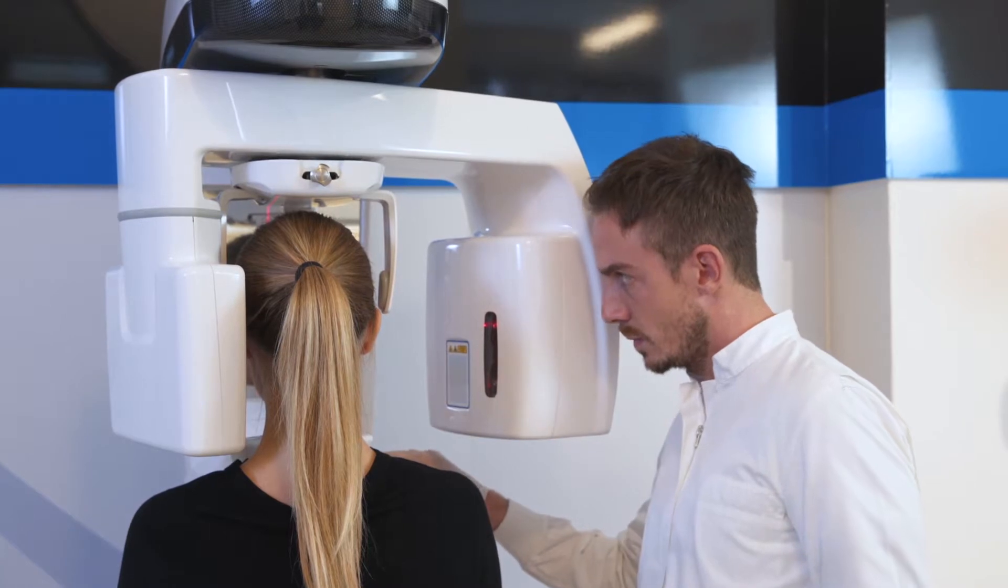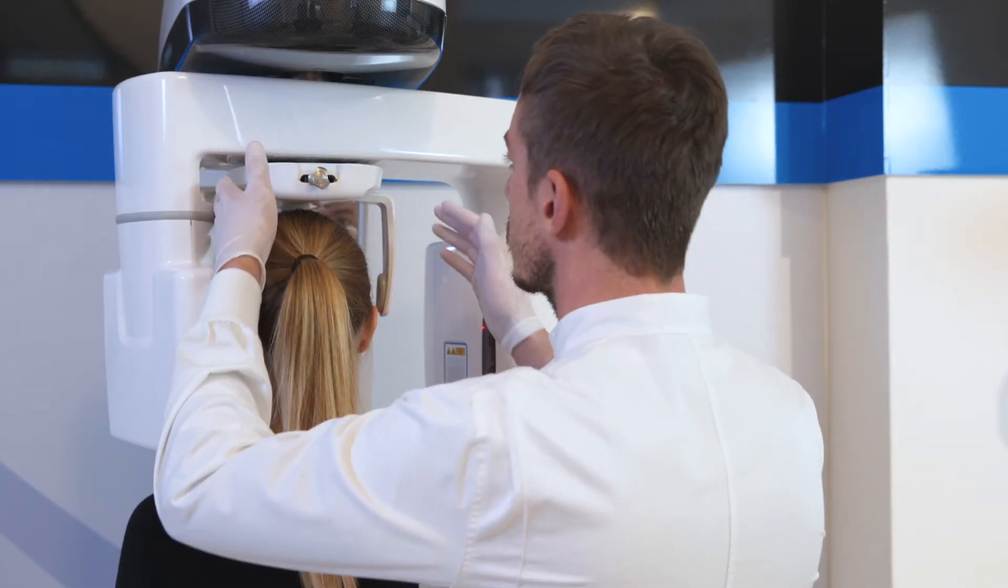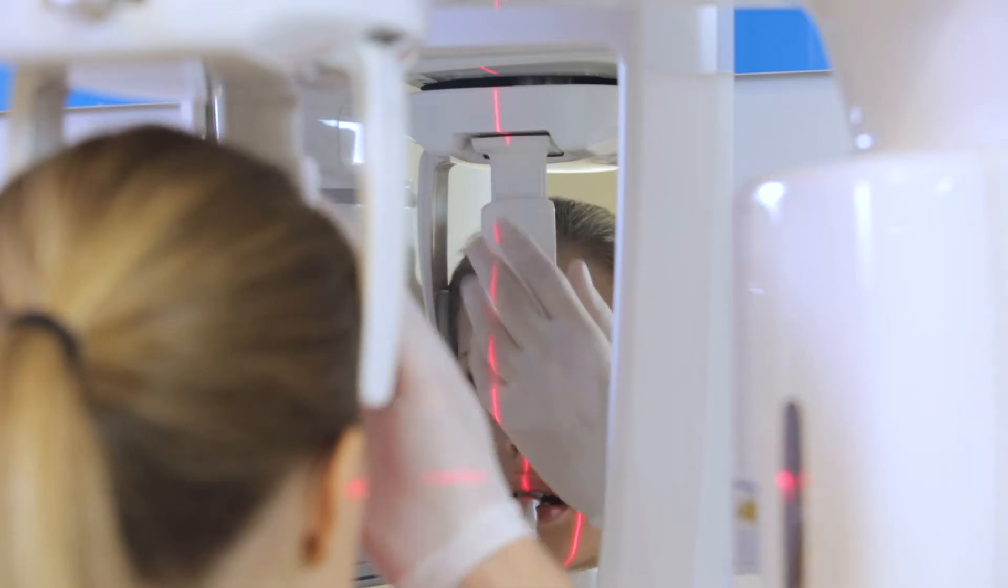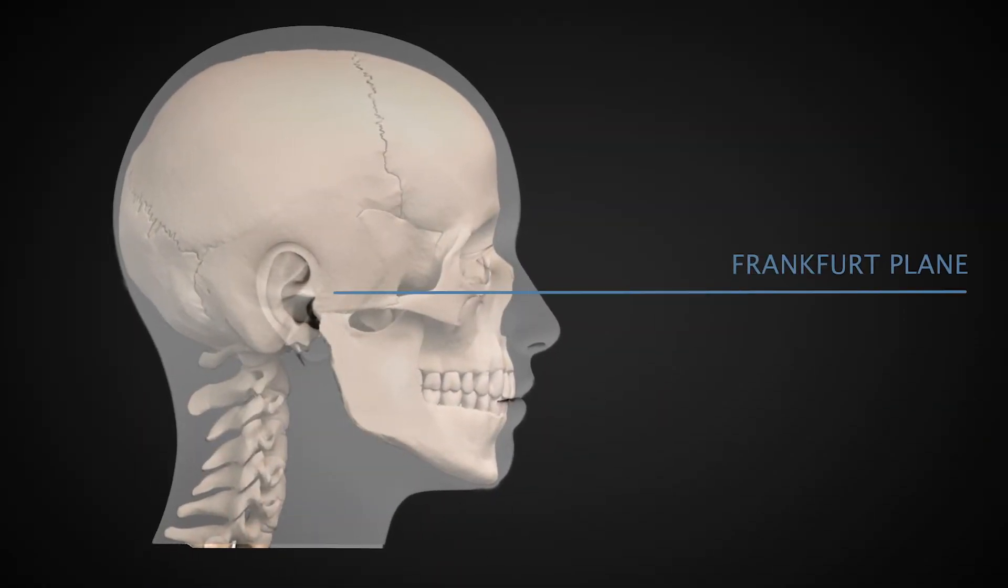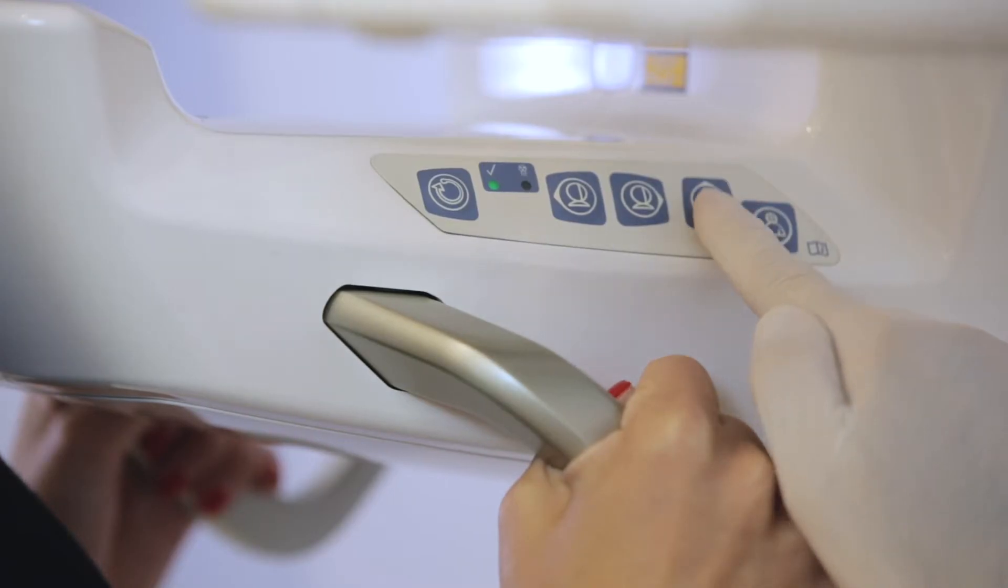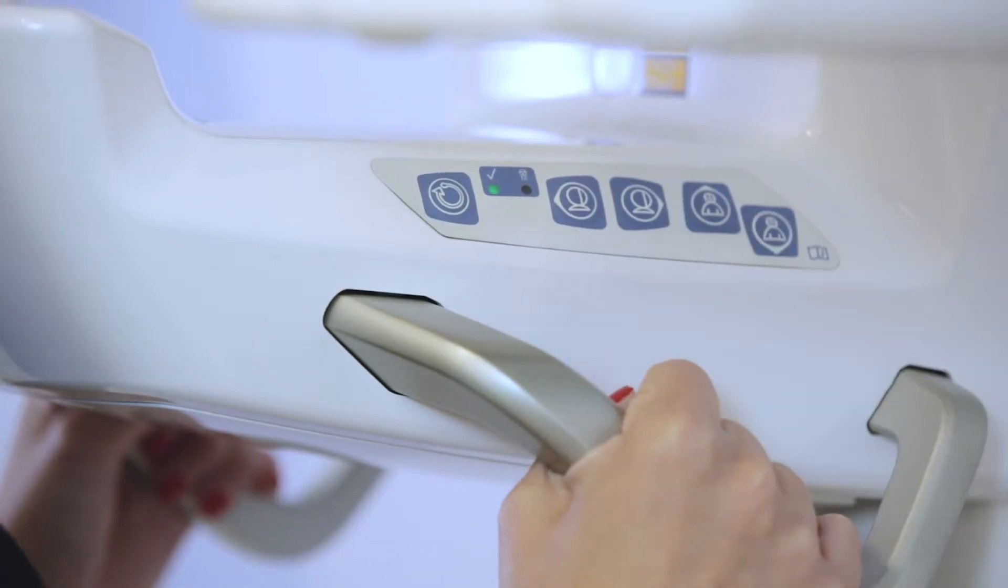Looking at the mirror and watching the vertical sagittal trace, facial symmetrical positioning can be improved. To adjust the head tilt angle and obtain the correct positioning of the Frankfurt plane, the dentist uses the up and down keys and the wheel to adjust the height of the laser.